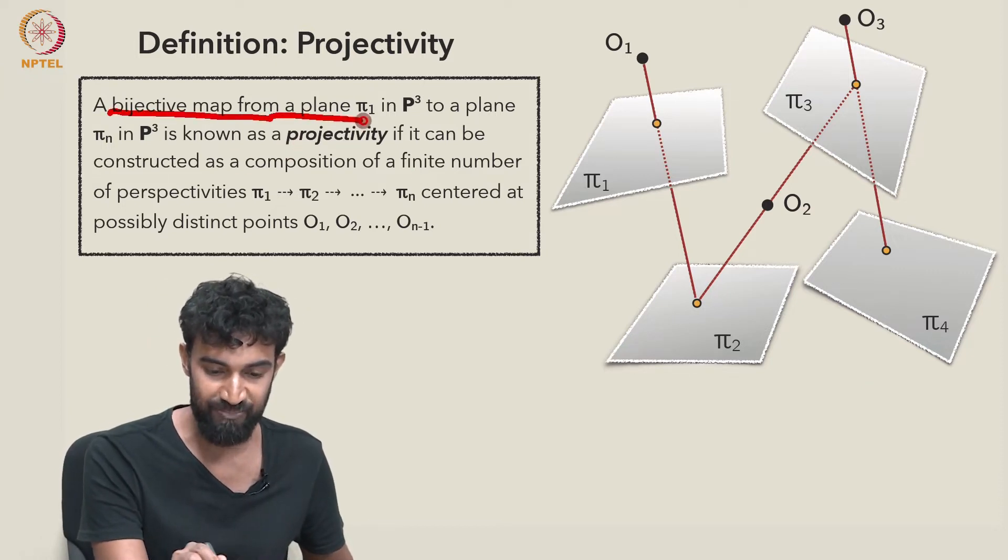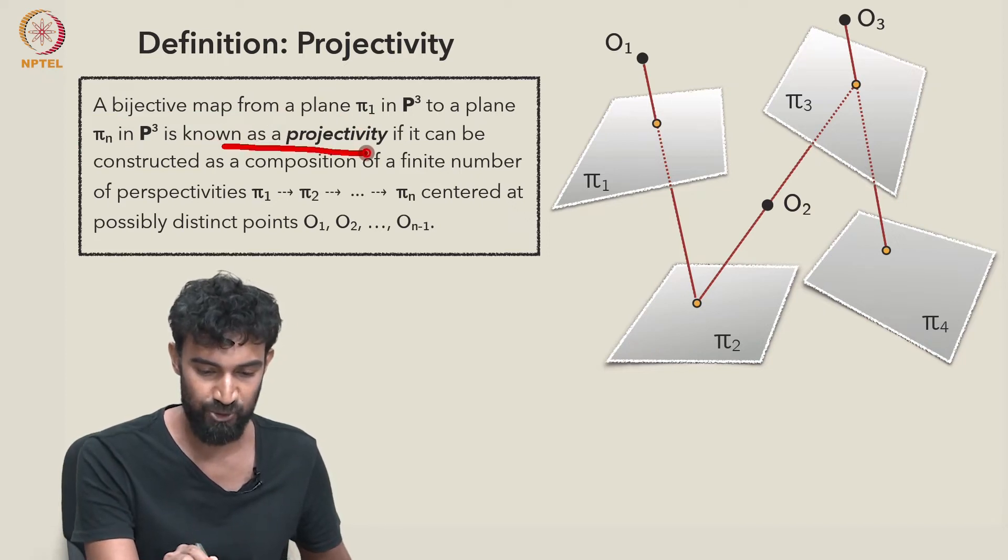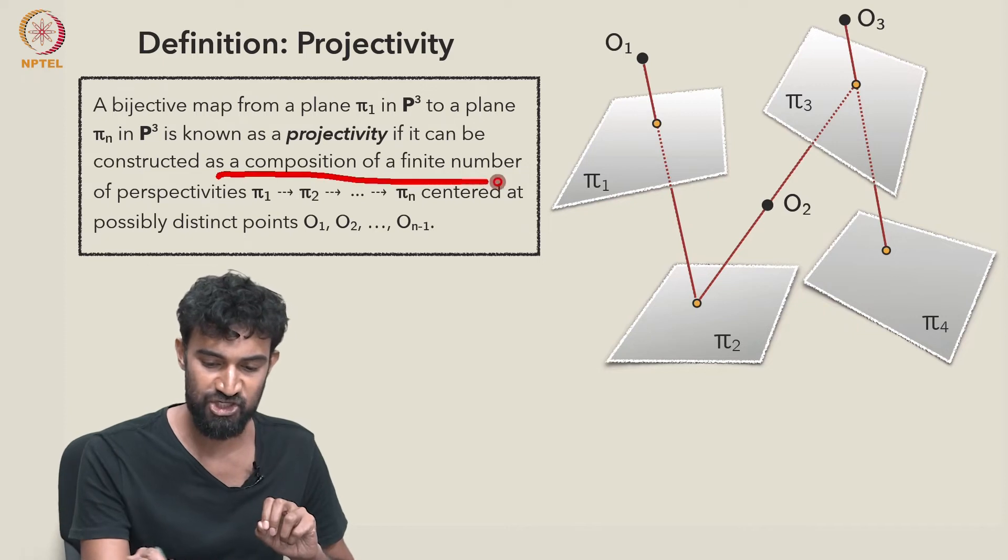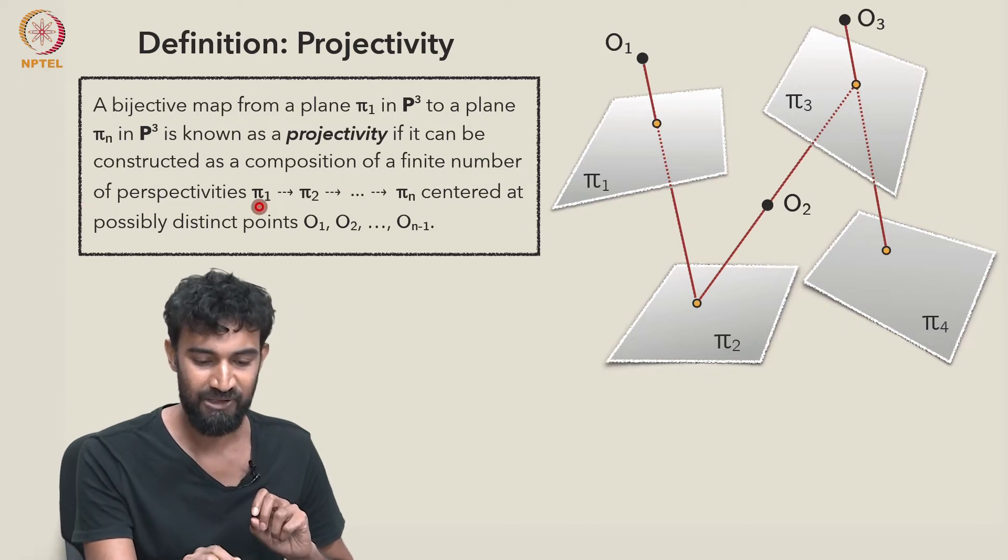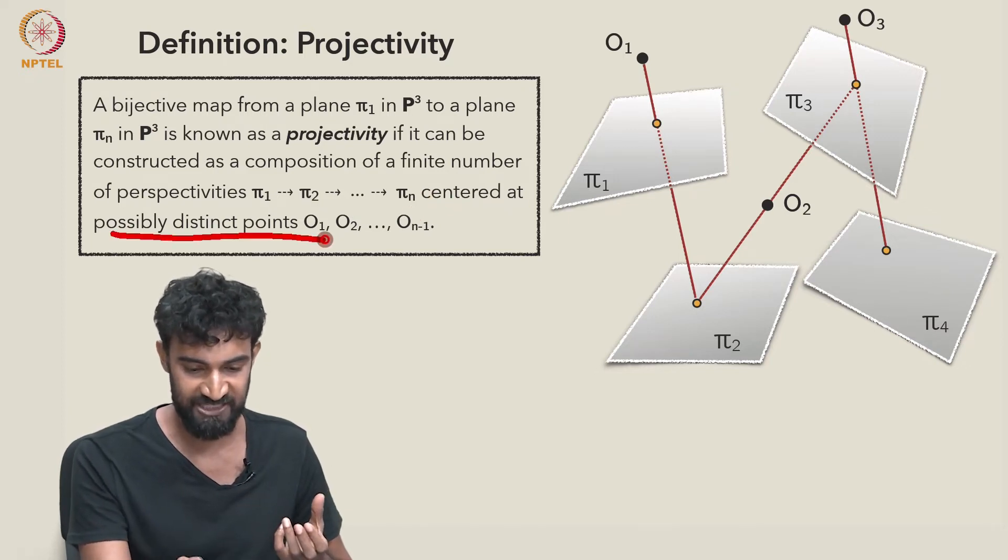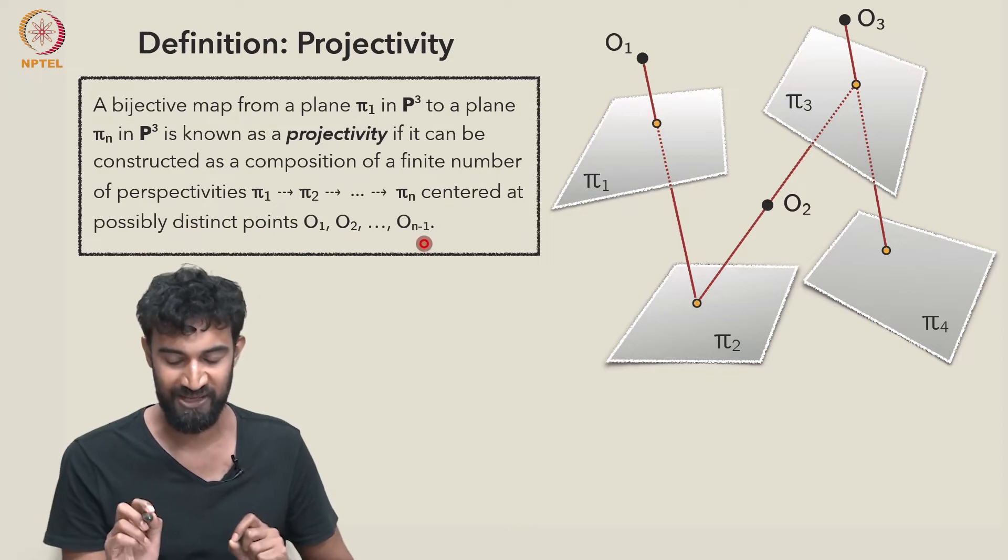So a bijective map from π₁ to πₙ is known as a projectivity if it can be constructed as a composition of a finite number of individual perspectivities, all which are centered at possibly distinct points, O₁, O₂, up to Oₙ₋₁.